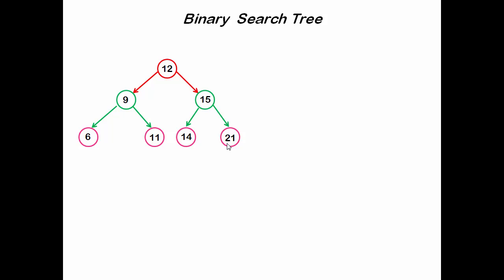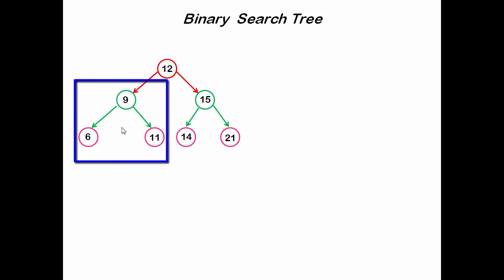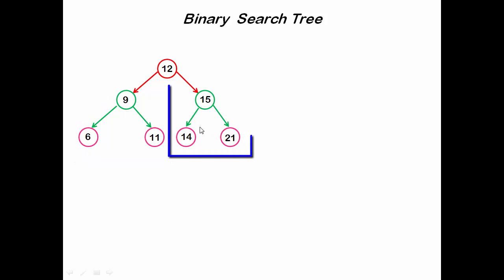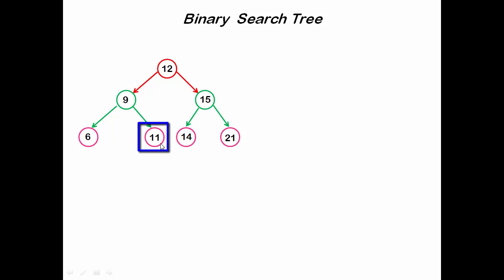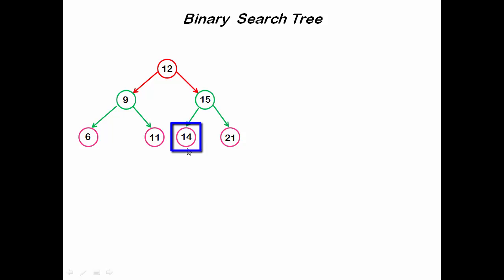Here I draw a binary tree — let's check if it is a binary search tree or not. The value of the root node is 12. The left subtree contains 9, 6, and 11 — all less than 12. The right subtree contains 15, 14, and 21 — all greater than 12. This condition is true for every node: the left subtree of 9 is 6 (less than 9), right subtree is 11 (greater than 9); left subtree of 15 is 14 (less than 15), right subtree is 21 (greater than 15).